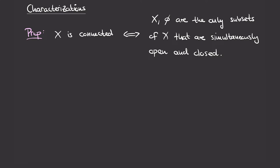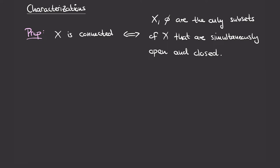We'll now see two characterizations of connectedness that give us a different way to think about this property. The first states that a space X is connected if and only if the only two subsets of X that are simultaneously open and closed are the entire space X and the empty set. Such subsets that are simultaneously open and closed are sometimes called clopen — which I find quite amusing.